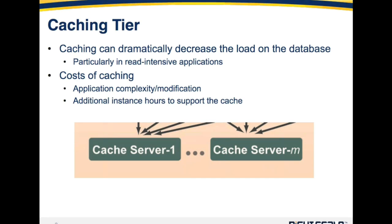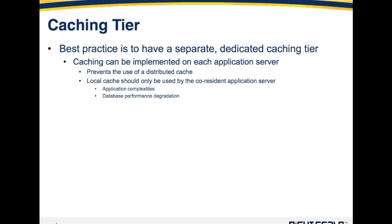There are also additional instance hours to support the cache. If you're going to run a distributed cache, which is what we'll recommend here, you're going to have additional servers running to support that cache, and as such you'll have to pay for the infrastructure cost for those servers. When it comes to caching, WriteScale's recommended best practice is to have a separate caching tier that's dedicated to caching and implements a distributed cache.